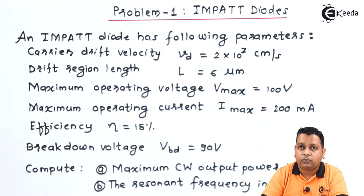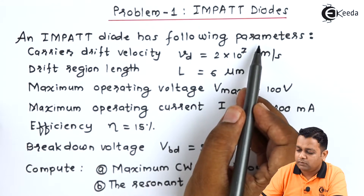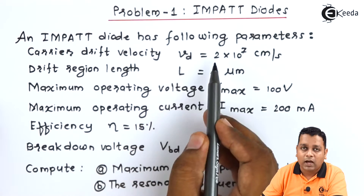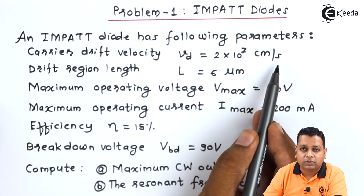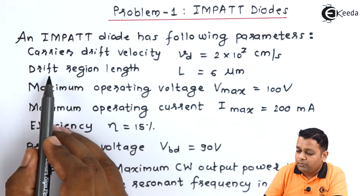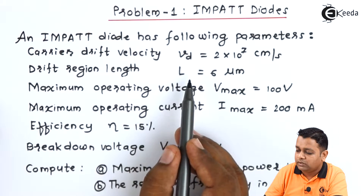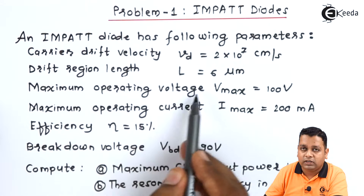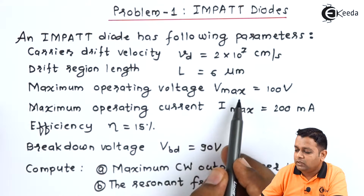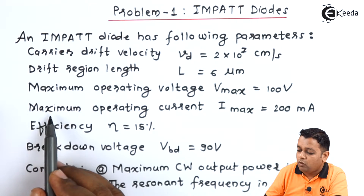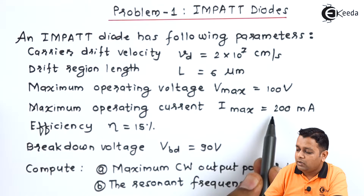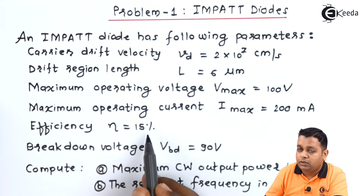The problem statement gives us an IMPATT diode with the following parameters: carrier drift velocity v_d = 2 × 10^7 cm/s; drift region length L = 6 micrometers; maximum operating voltage V_max = 100 volts; and maximum operating current I_max = 200 milliamperes.